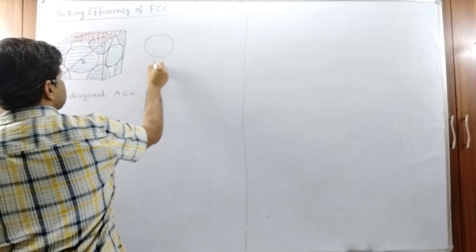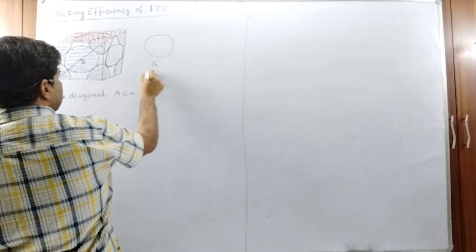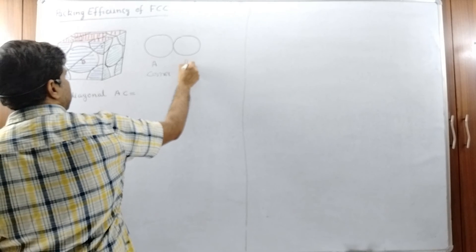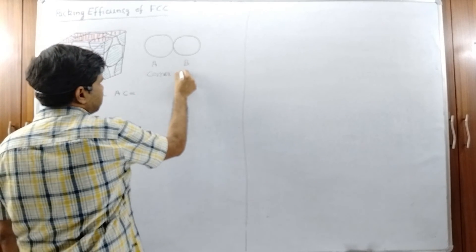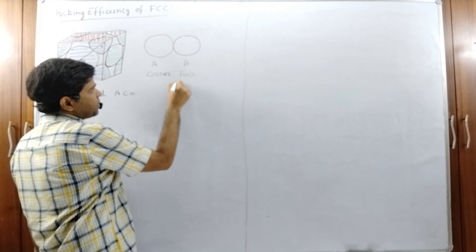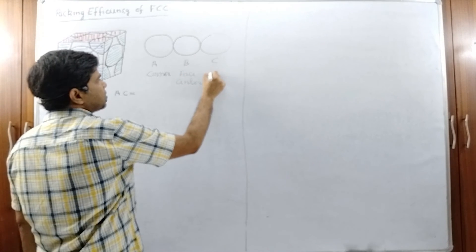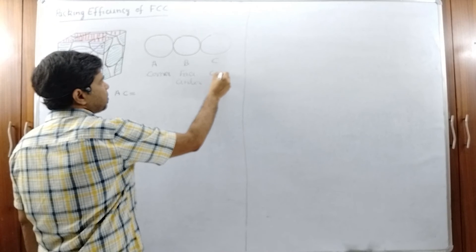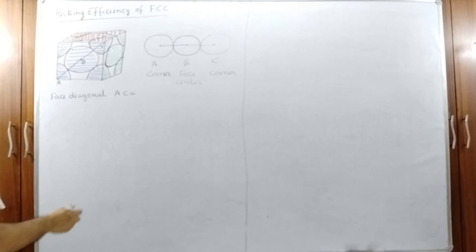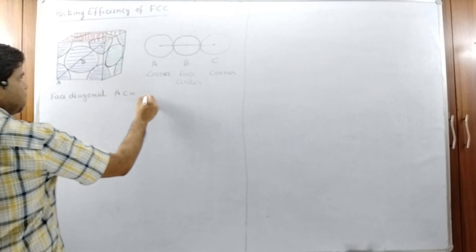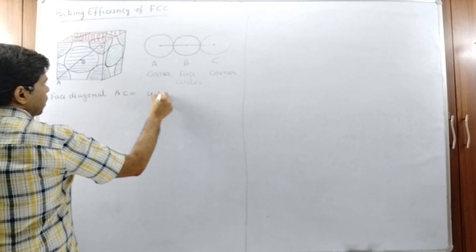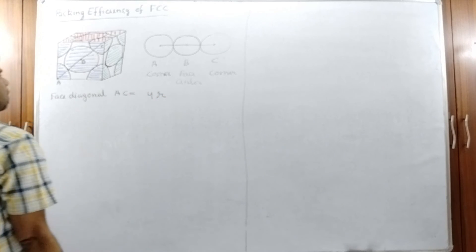Particle A is the corner particle, particle B is the face center particle, and particle C is again a corner particle. The face diagonal AC is equal to 4R.